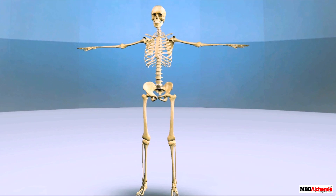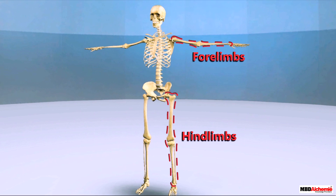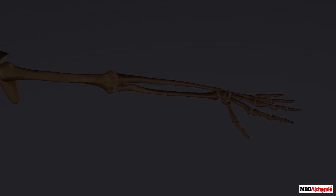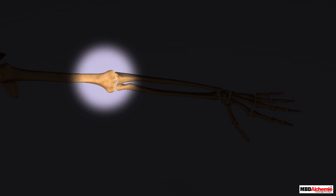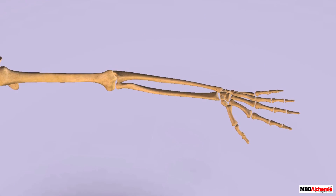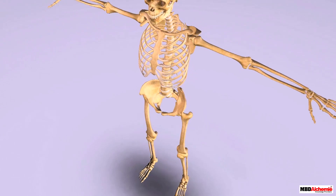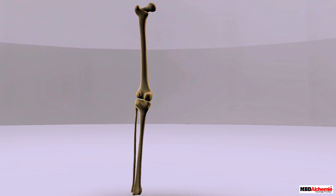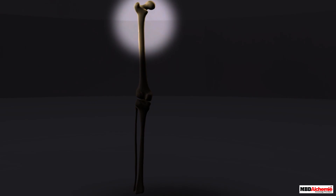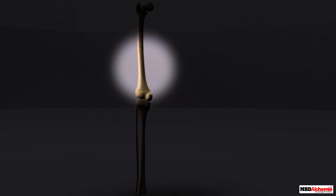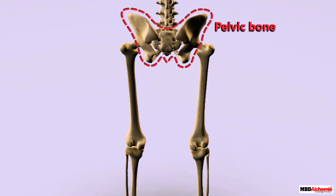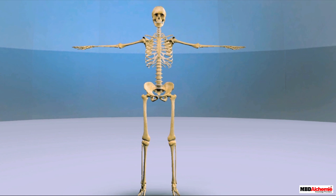The limbs constitute the last part of the skeleton. They are forelimbs and hind limbs. The bones of the arm form the forelimbs. Three bones — one long bone in the upper arm and two small bones in the lower arm — make the forelimbs. The bone of the upper arm is attached to the vertebra by the collar bone and the shoulder blade. Similarly, three bones in the leg form the hind limb: one bone in the upper leg or thigh, and two bones in the lower leg. The legs are supported by the pelvic bone.